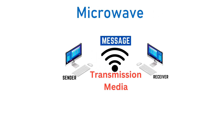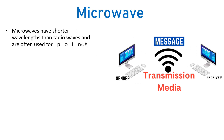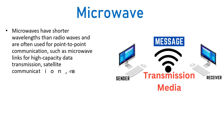Microwave is another type of unguided transmission media with shorter wavelengths compared to radio waves. Microwaves are often used for point-to-point communications such as microwave links for high-capacity data transmission, satellite communications, and radar systems. Point-to-point communication means there are no obstacles between the sender and receiver.